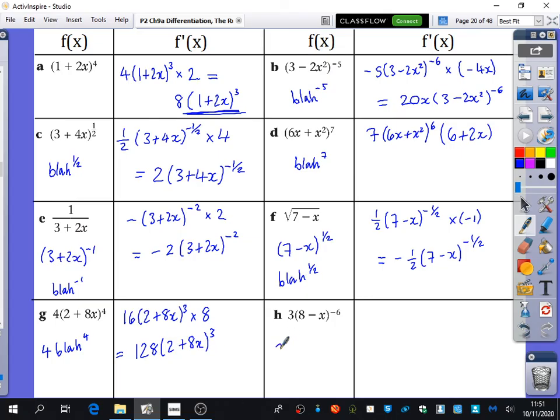And then the last one that we have is like 3 blah to the minus 6. 3 blah to the minus 6 would differentiate to minus 18 blah to the minus 7. And you need to multiply it by the derivative of blah, which is minus 1. So it's going to change it to a plus 18 instead of a minus 18.